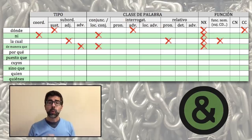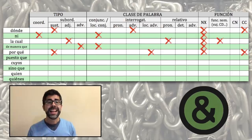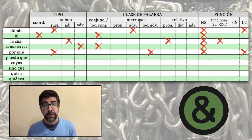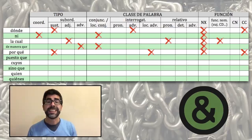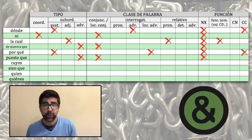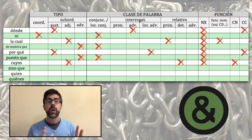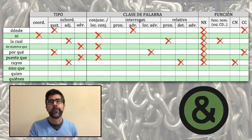La locución 'de manera que' introduce proposiciones subordinadas adverbiales consecutivas. Es una locución conjuntiva y, por esto, solo funciona como nexo. 'Porque', con tilde, introduce proposiciones subordinadas sustantivas e interrogativas indirectas y es una locución adverbial interrogativa, por lo que, además de la de nexo, desempeña dentro de la proposición la función de complemento circunstancial. 'Puesto que', por su parte, introduce proposiciones subordinadas adverbiales causales y es una locución conjuntiva. Como conjunción, solo funciona como nexo. 'Cuyos' es un determinante relativo que introduce proposiciones subordinadas adjetivas o de relativo y funciona, además de como nexo, como complemento del nombre dentro de la proposición.